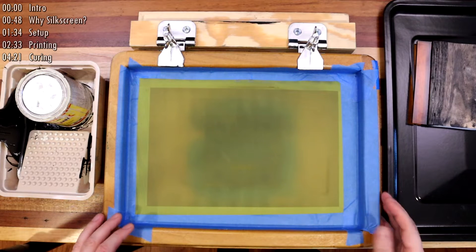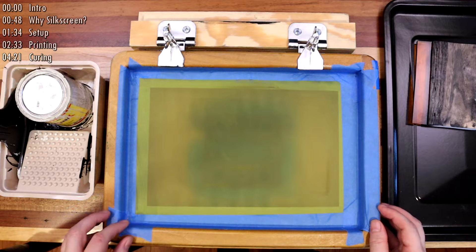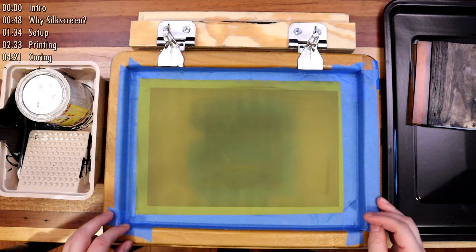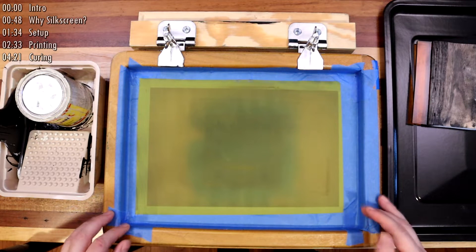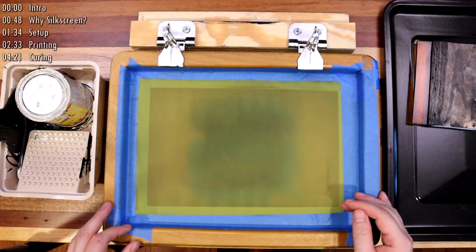A higher mesh count allows for smaller lines and thinner text. I'm using a 230 mesh count. The benefit of silk screen is that it's fast, durable, consistent, and cheaper when doing a lot of pedals.